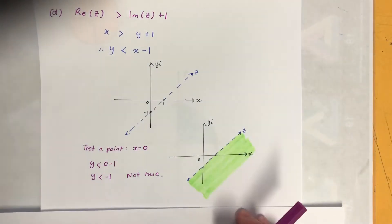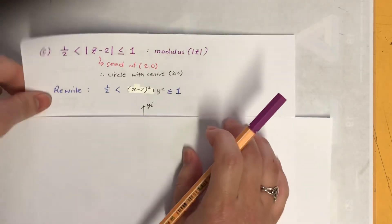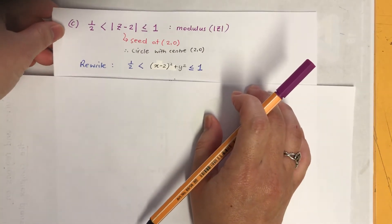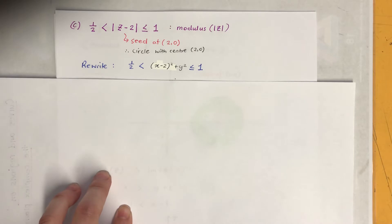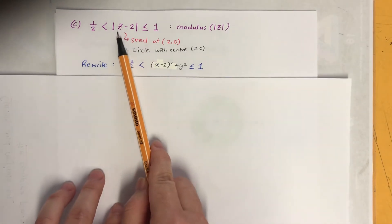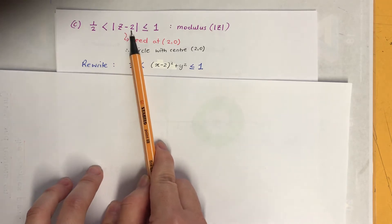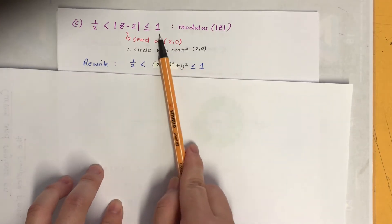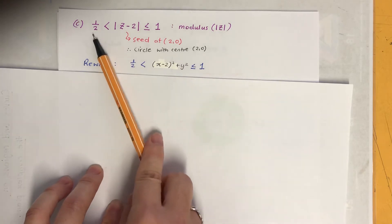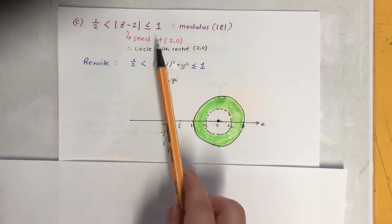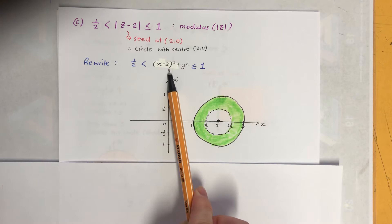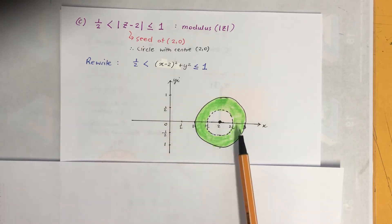The third one, now when you see a modulus most of the time it's circle because that will be, I can see straight away that's going to be the circle with the center of two and zero and radius is one and it could be half. So we're looking at two circles here. So that's what it looks like. I replaced that into these using the Z equals X plus Yi.